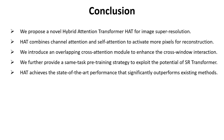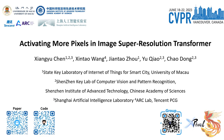In summary, there are five points in this work. We propose a novel hybrid attention transformer HAT for image super-resolution. HAT combines channel attention and self-attention to activate more pixels for reconstruction. We introduce an overlapping cross-attention module to enhance cross-window interaction. We provide a same-task pre-training strategy to exploit the potential of SR transformer. HAT achieves state-of-the-art performance, significantly outperforming existing methods. Thanks for listening. Links to the paper and code are at the bottom left, along with a link to our group.